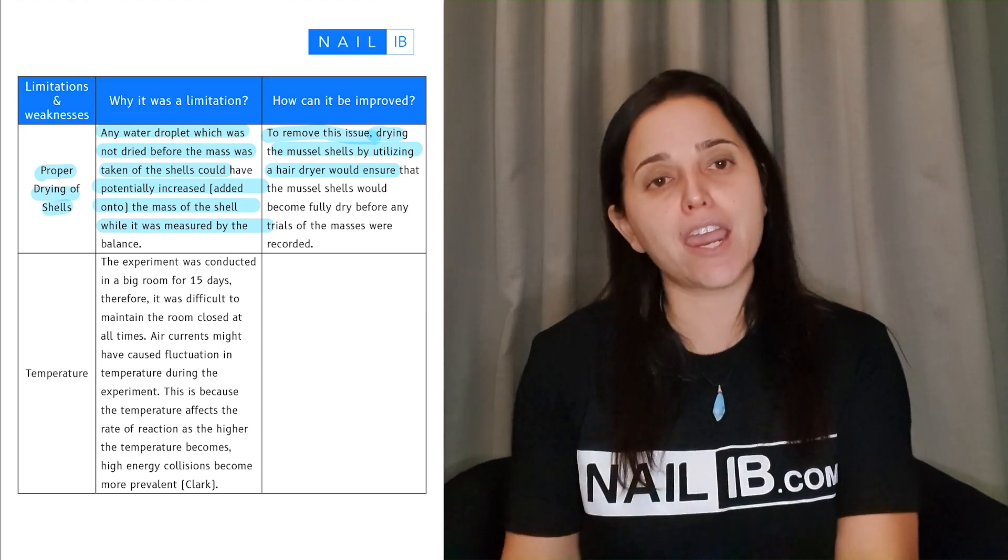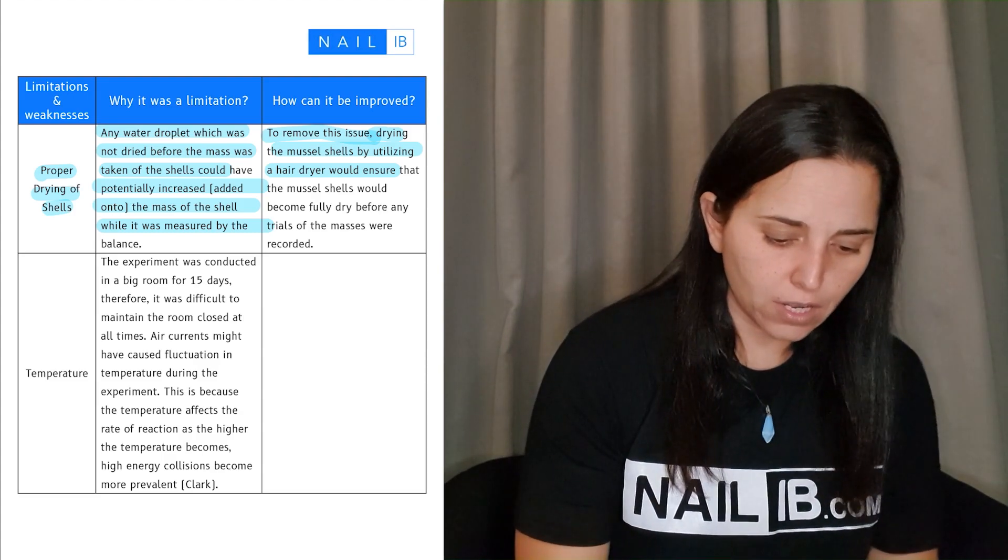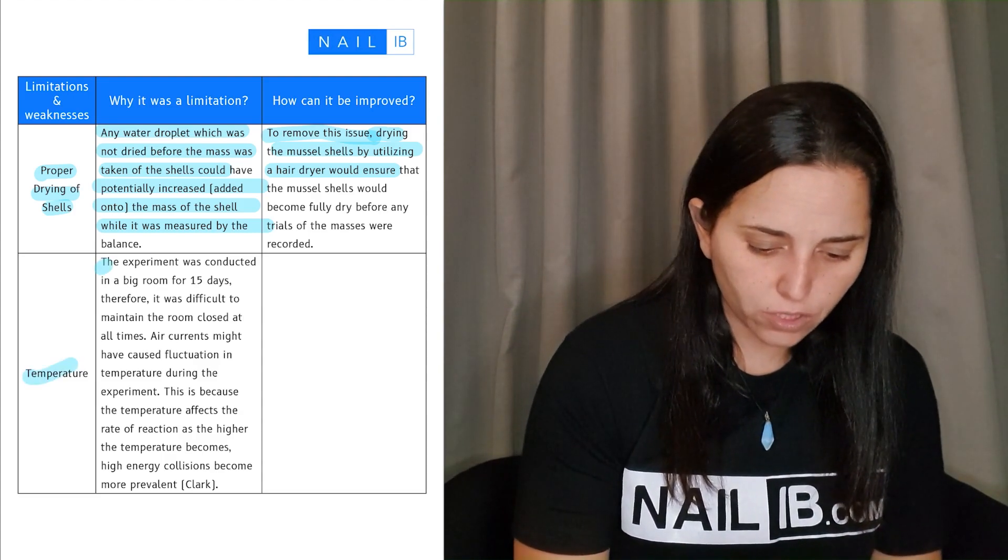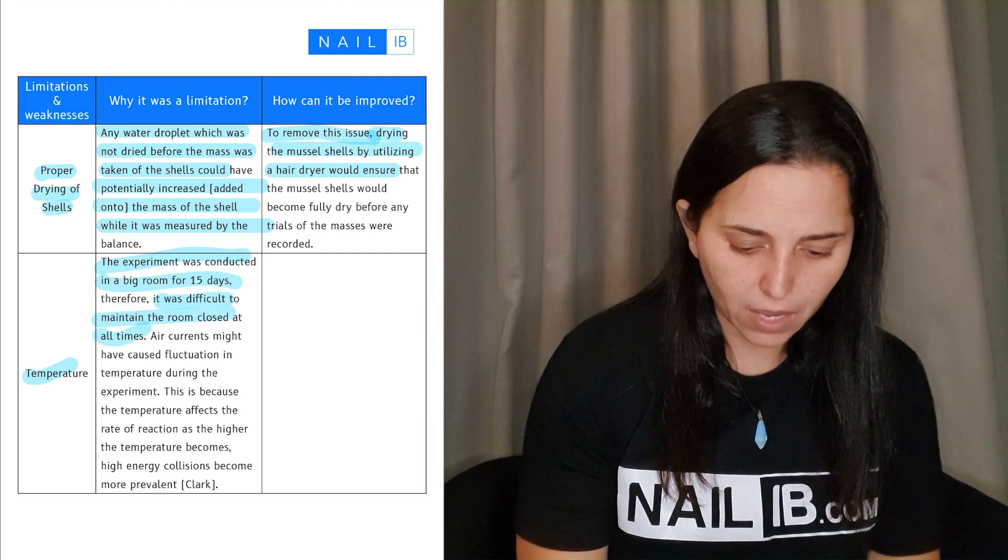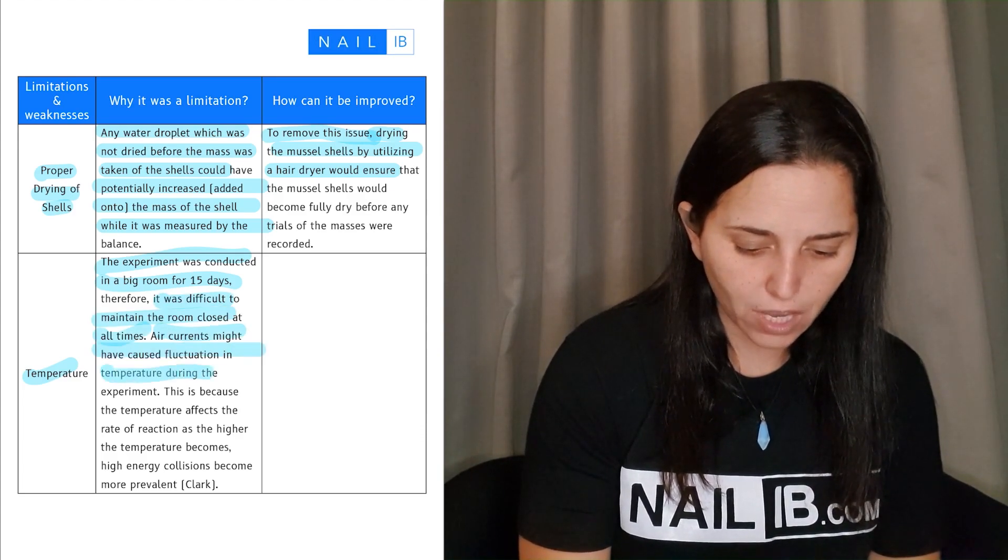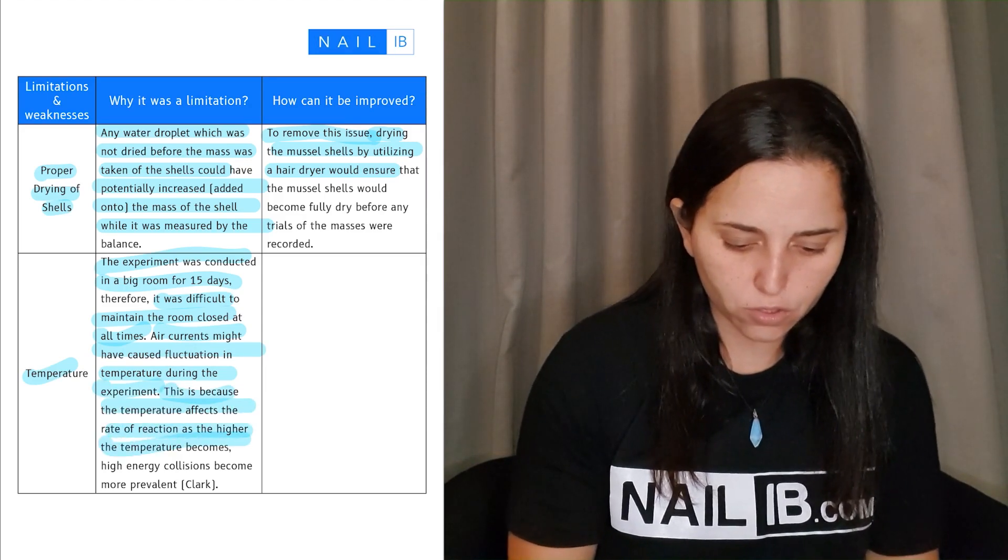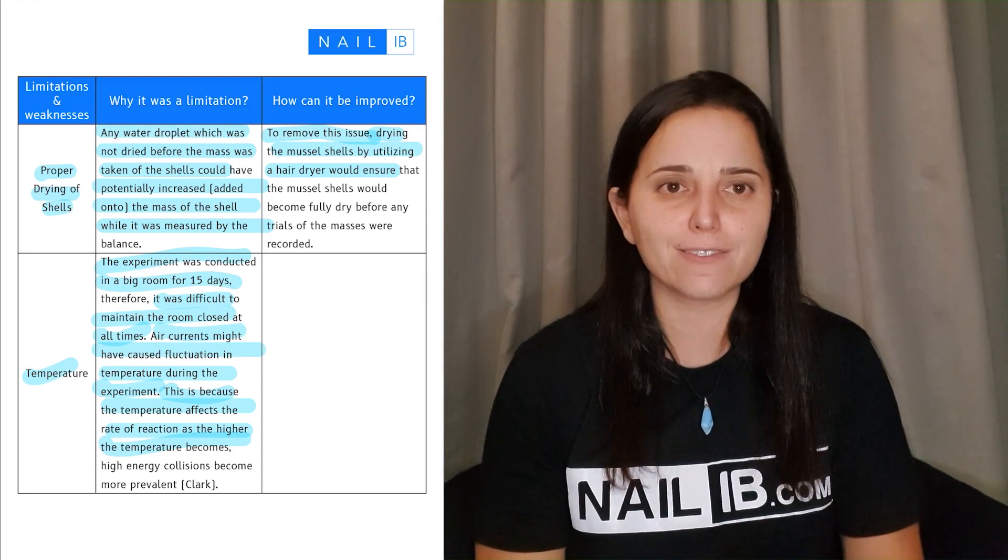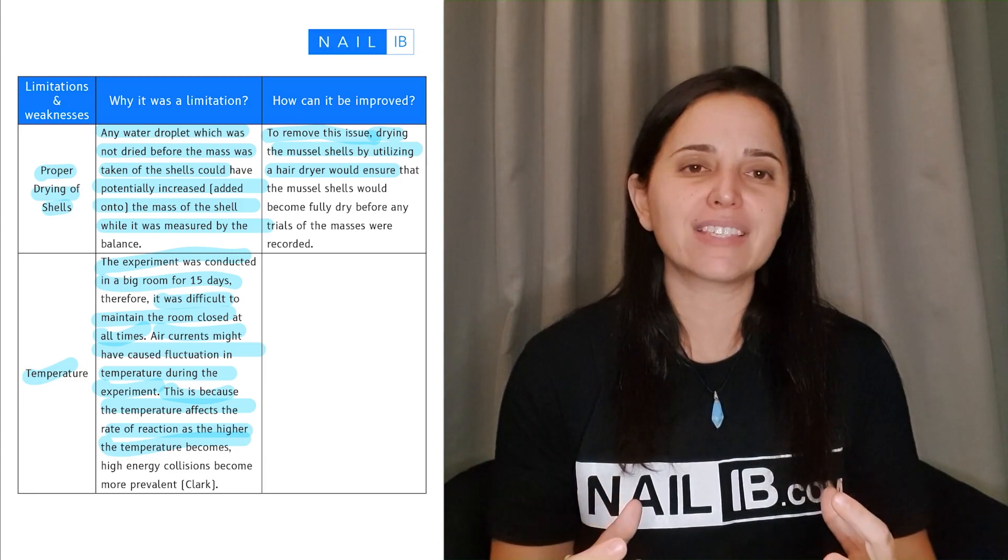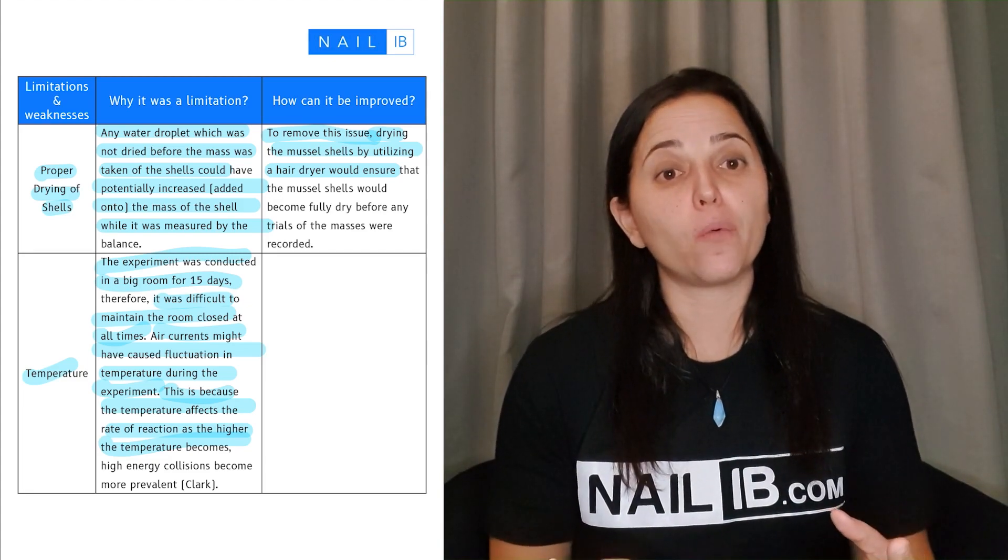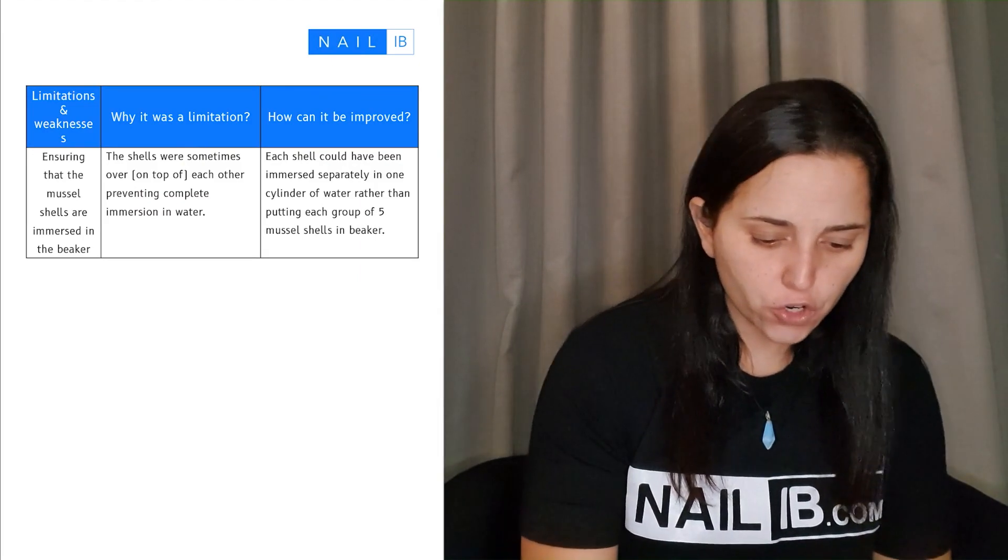Here, the temperature: 'Experiment was conducted in a room of 15 days, therefore it was difficult to maintain the room closed at all times. Occurrence might have caused a fluctuation in temperature during the experiment. This is because it affects the rate of reaction at higher temperature.' What would you do in this case? Make sure it doesn't open the doors, keep the AC exactly in there. That would be a way of controlling the temperature.